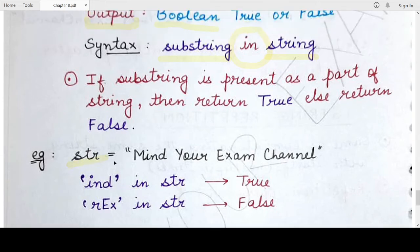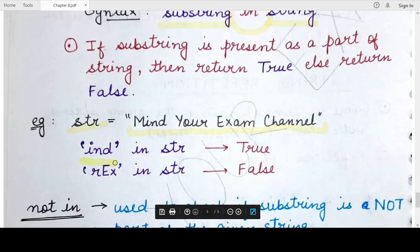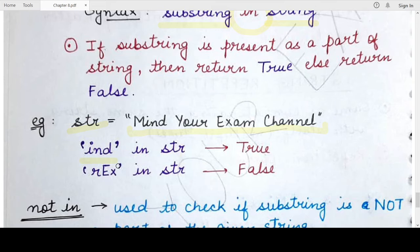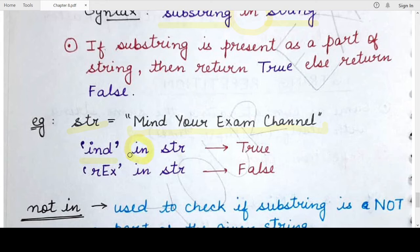Consider a string `str` with the contents 'mind your exam channel'. Now I want to check whether the substring `ind` is present in it. Note that this checking is case sensitive — it is performed in terms of ASCII values, meaning the character codes for lowercase and uppercase characters are different. If you write `ind in str`, this statement returns `True` because `ind` is part of the string `str`.